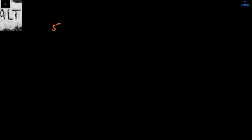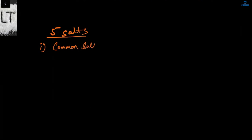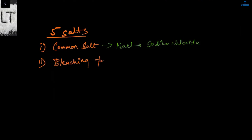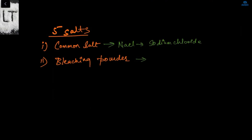The first type of salt is common salt — NaCl, sodium chloride, which we commonly use. The second type is bleaching powder. The formula of bleaching powder is CaOCl₂ — where Ca is calcium, Cl is chloride, and O stands for oxychloride. So CaOCl₂ is the formula of bleaching powder.